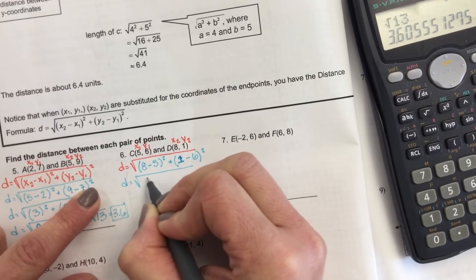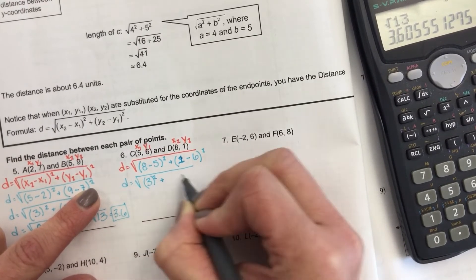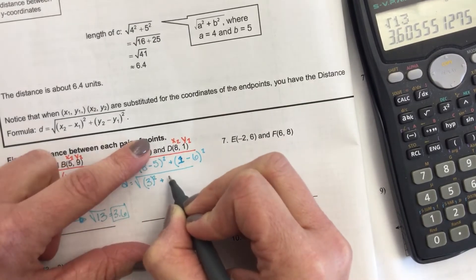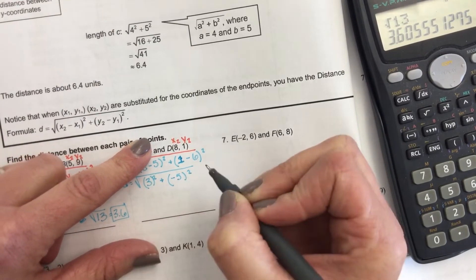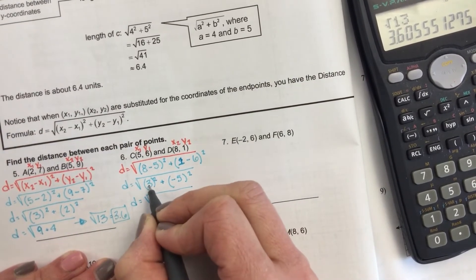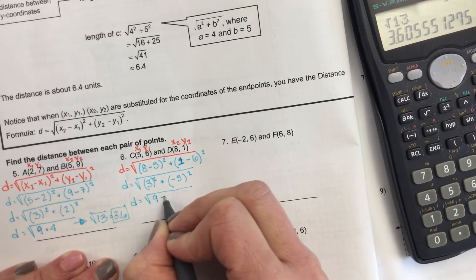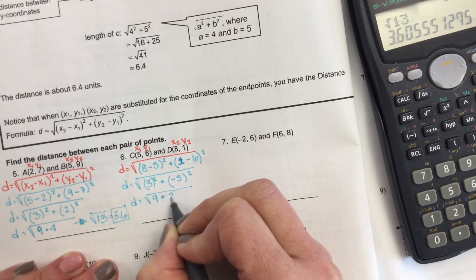Okay. 8 minus 5 is 3. And I like to keep that in parentheses even though it's positive, because now we're going to have a negative. 1 minus 6 is a negative 5. Now you're never going to have negatives underneath this because squaring it takes care of that. So 3 squared is 9.